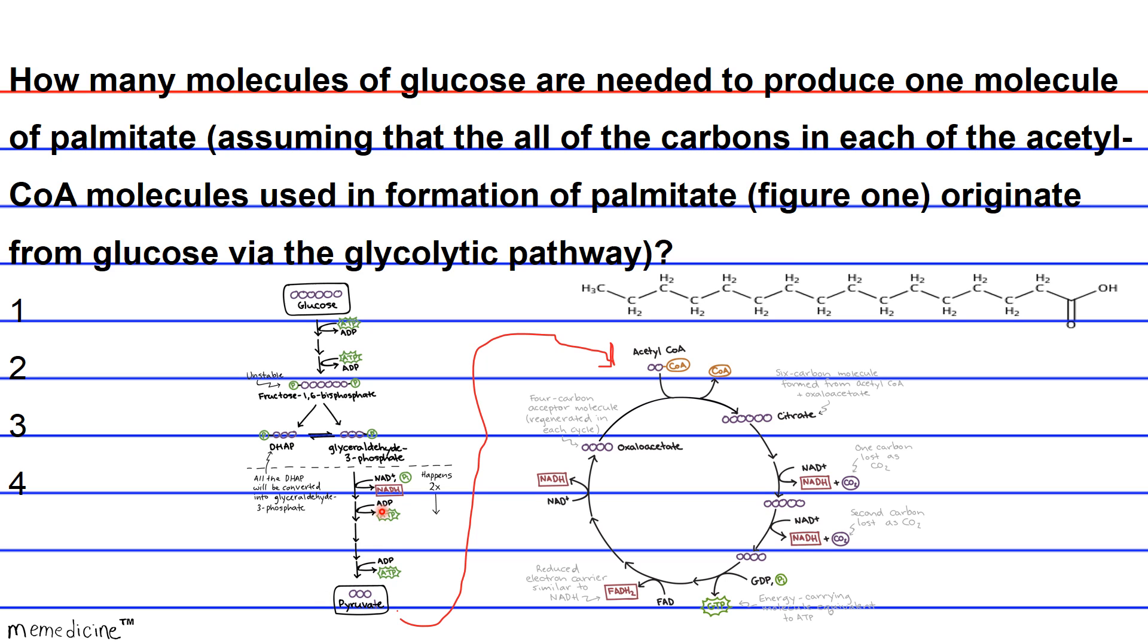So one molecule of pyruvate is then converted to one molecule of acetyl-CoA. Acetyl-CoA is basically a two-carbon substance. So from one glucose, you get two acetyl-CoA's, which is a four-carbon substance. So ultimately, palmitate, we're told, has 16 carbons. So you would need four times four, four squared—you would need four glucose molecules to produce one molecule of palmitate, or fat.